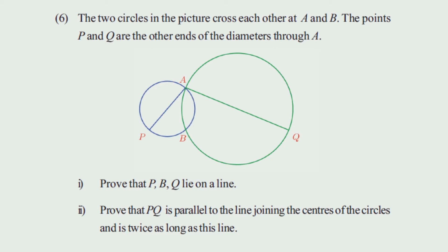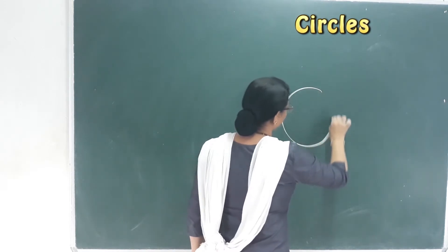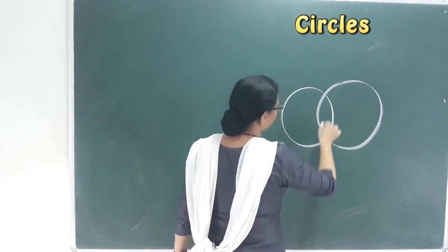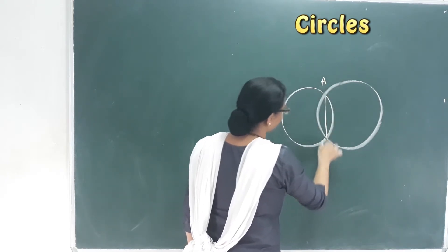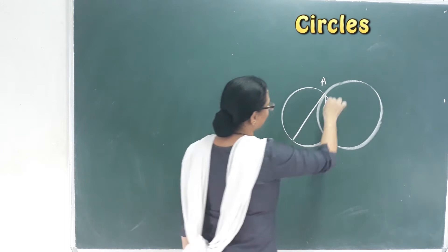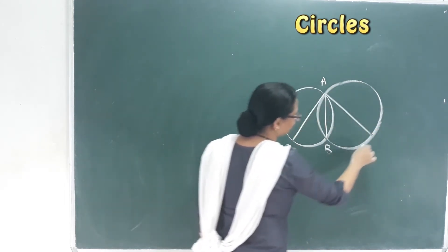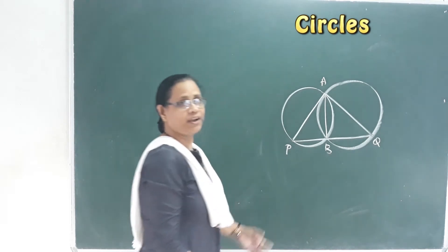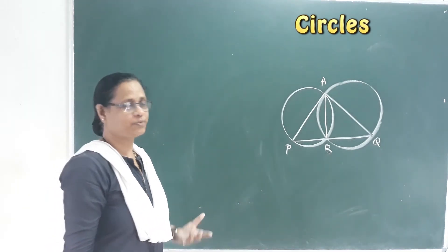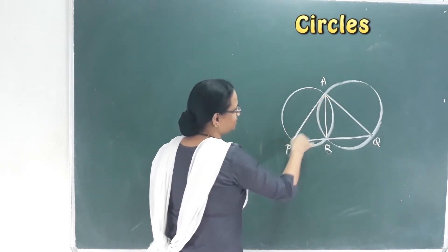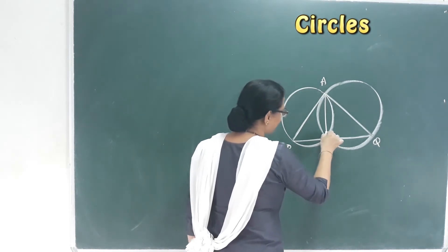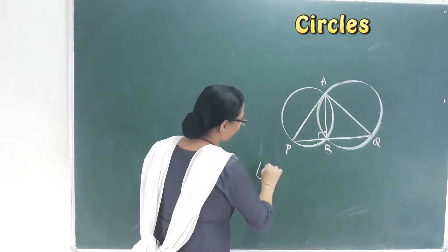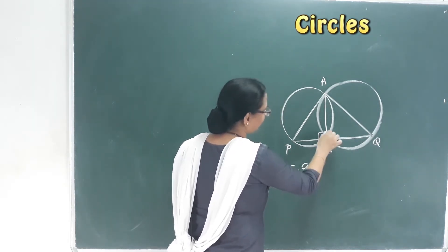Two circles in the picture cross each other at A and B. The points P and Q are the other ends of the diameters through A. This is one circle and this is another circle — the meeting points are A and B. This is a semicircle. In this semicircle, this angle ABP is 90 degrees because this is a semicircle.